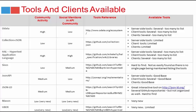When picking a hypermedia language, you also need to look at the communities and tools and clients available. There are two communities to consider: the actual standards community and what's happening socially in the API community. OData has a very large active community — it's been around a long time — but when you talk about hypermedia APIs in the broader API community, OData is rarely mentioned. That kind of makes you think: what's going on there?